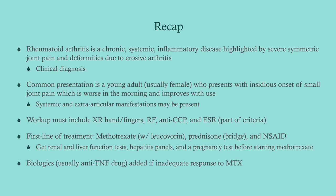To recap: RA is a chronic systemic inflammatory disease with severe symmetric joint pain and deformities. It is erosive and is a clinical diagnosis. It typically presents as a young woman — often of color — with an insidious onset of small joint pain over weeks to months, worse in the morning and improving with use. Workup includes X-ray of the hands/fingers, rheumatoid factor, anti-CCP, ESR, and CRP. First-line treatment is methotrexate plus leucovorin; use prednisone as a bridge and always include an NSAID. Before methotrexate, obtain renal and liver function tests, hepatitis panels, and a pregnancy test. Add biologics (anti-TNF agents) if methotrexate provides inadequate control.